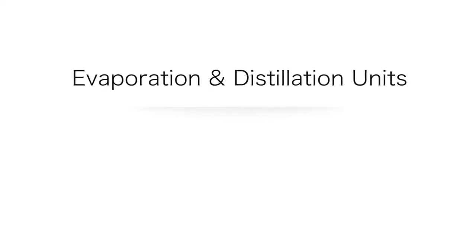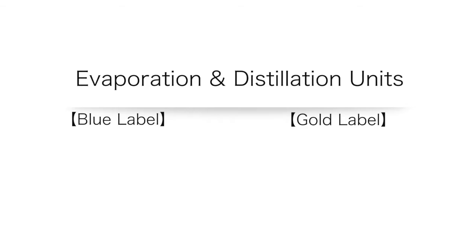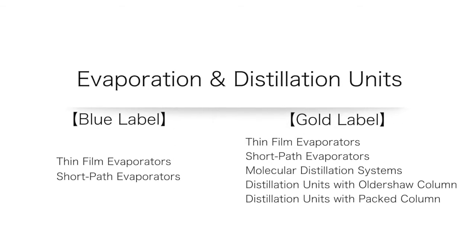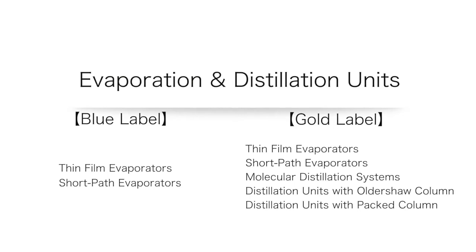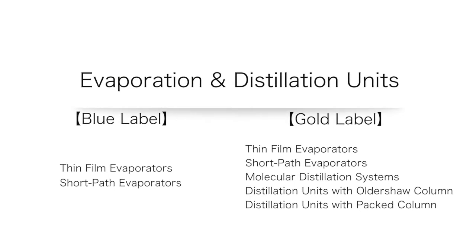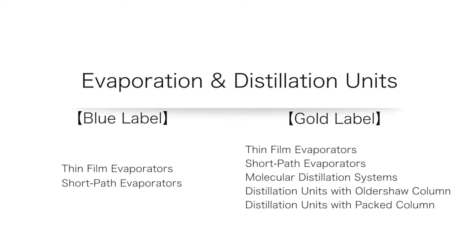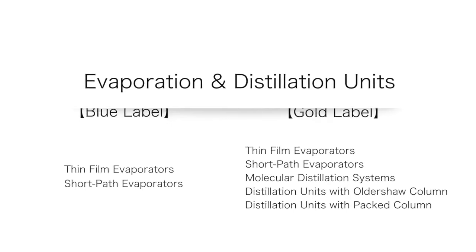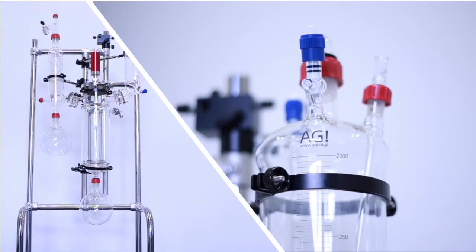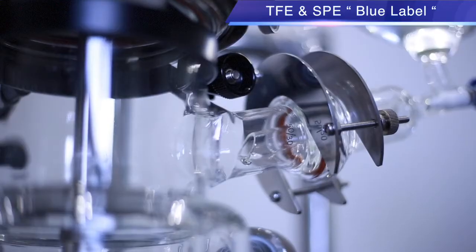Evaporation and Distillation Units. Introducing our AGI Evaporation and Distillation Units line-up. We produce Blue Label and Gold Label Evaporation and Distillation Units. Our Blue Label Units consist of apparatus that are ready to use and easily installed. Our Gold Label products are custom-made apparatus specifically designed in accordance to customer requirements.